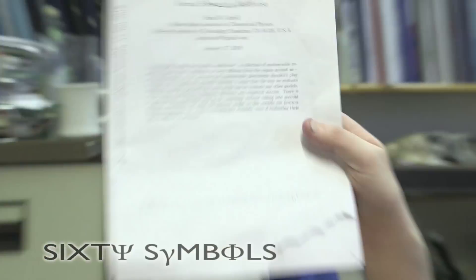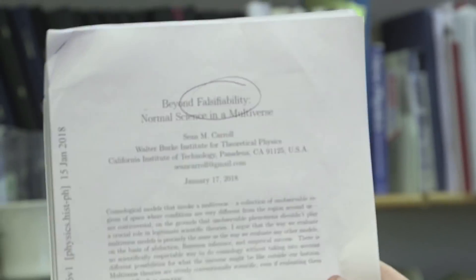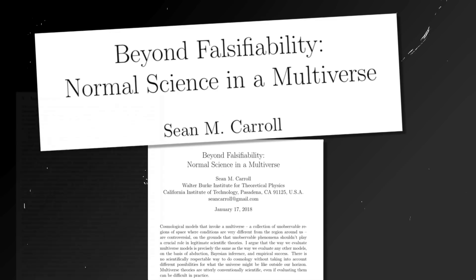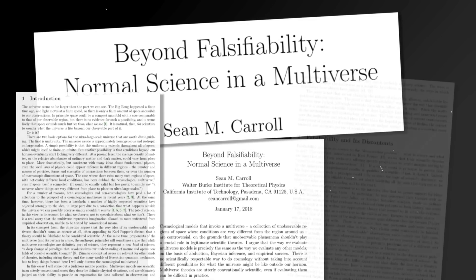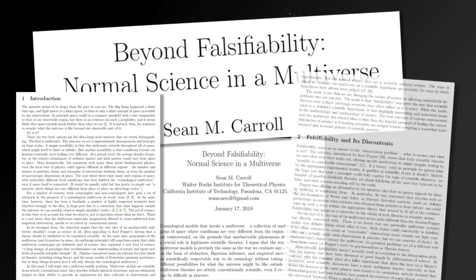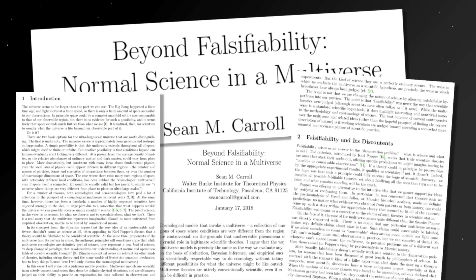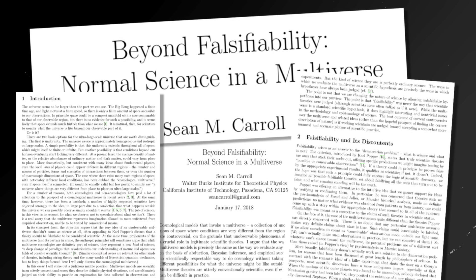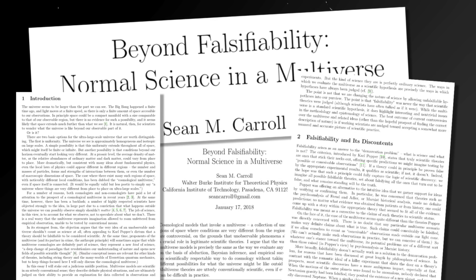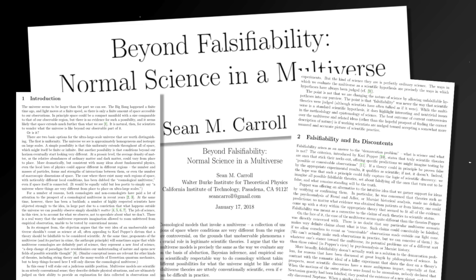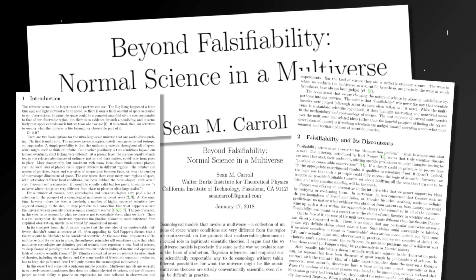We're going to talk about this paper by Sean Carroll. Sean Carroll's a wonderful writer. If you're not familiar with his books and his blog, I thoroughly recommend them. It's Sean's take on the multiverse idea, but it's beyond that — it says 'beyond falsifiability.' So the multiverse thing we've done before in 60 Symbols.